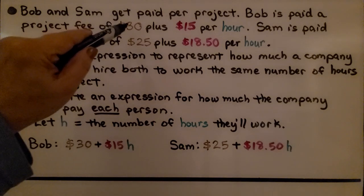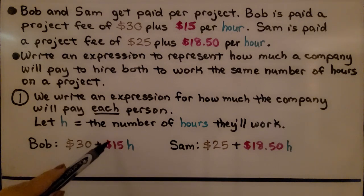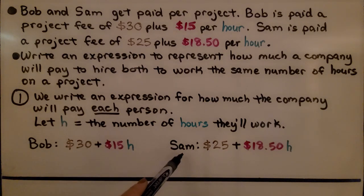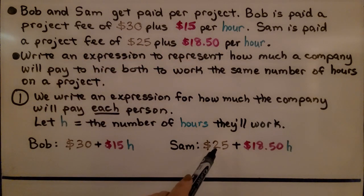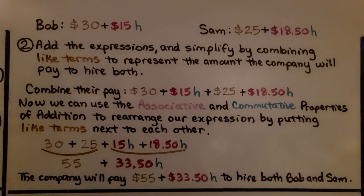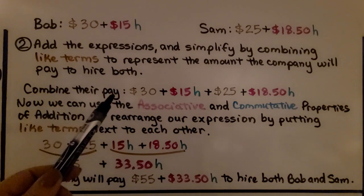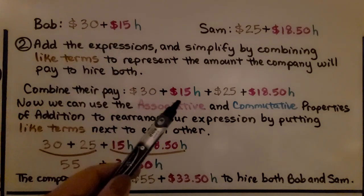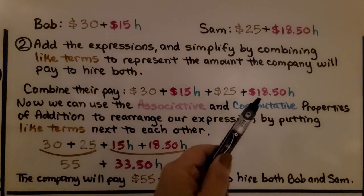So for Bob, we have $30 plus $15 per hour. That would be $30 plus $15h. Sam would be $25 plus $18.50 per hour as $25 plus $18.50h. The second thing we do is add the expressions and simplify by combining the like terms to represent the amount the company will pay to hire both. We combine their pay.